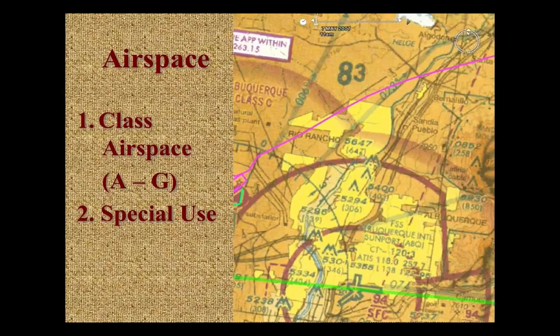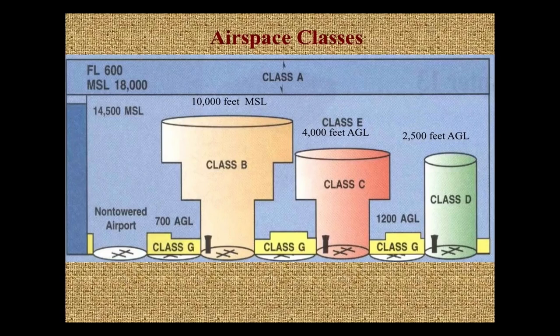The FAA breaks up airspace into two major categories. The first is class airspace, which gets an alphabetic designation like A, B, C and so on. Then there's special use airspace — like military practice areas or restricted areas. We're going to look at both today, starting with the class airspace system A through G. There is no Class F in the United States.